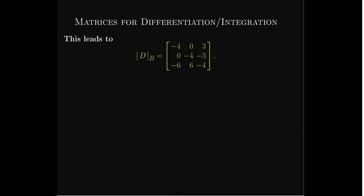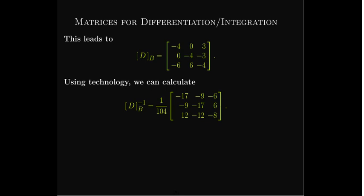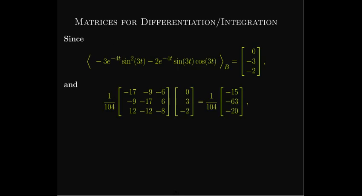We'll use technology to calculate the inverse of this matrix, so that the inverse represents the matrix representation of taking the antiderivative. Our integrand is a linear combination of functions in B with -3 on the sine-squared term, -2 on the sin(3t)cos(3t) term, and no cosine-squared term — giving coordinate vector (0, -3, -2). Multiplying the inverse matrix by that coordinate vector will give the coordinate vector of the antiderivative.